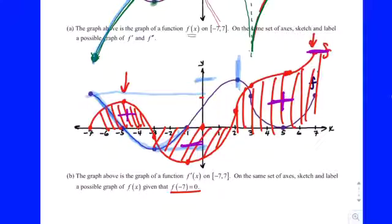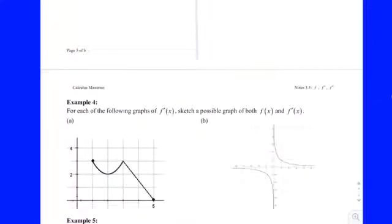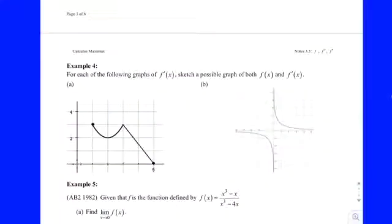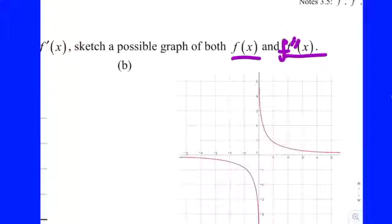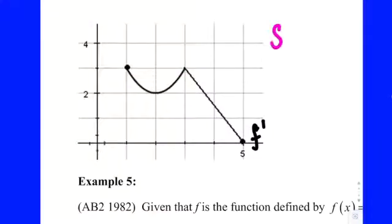Let's do one more here, because I feel like you'll need practice with it. So that concludes example three. Moving on to four. It says: for each of the following graphs of f prime, sketch a possible graph of both f and f double prime. So we're starting kind of in the middle — we want to sketch one going forward and one going backwards. I'll label this as f prime. Go ahead and sketch the graph of f double prime first. That's the one I was going to give you an extra example of — sketch the derivative of that function.